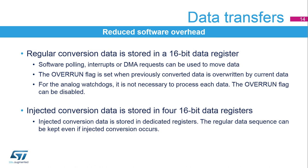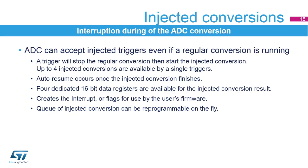The ADC conversion result is stored in a 16-bit data register. The system can use CPU polling, interrupts, or DMA to make use of the conversion data. An overrun flag can be generated if data is not read before the next conversion data is ready. For injected channel conversions, four dedicated data registers are available. An injected conversion is used to interrupt the regular conversion, then insert up to four channel conversions. Once an injected conversion is finished, the regular conversion sequence can be resumed.